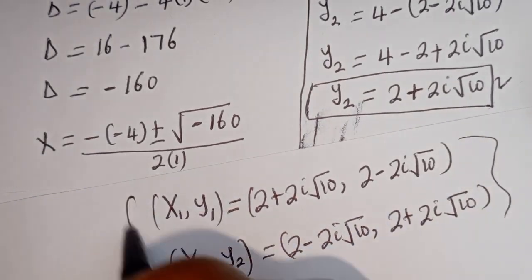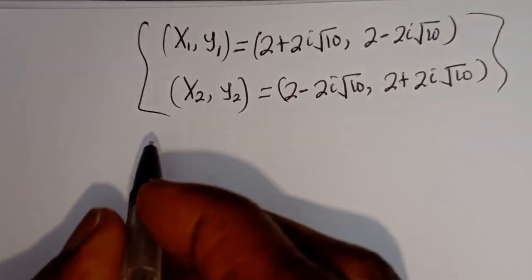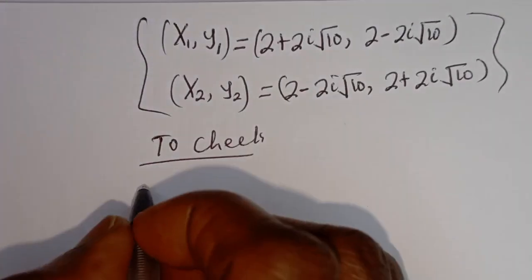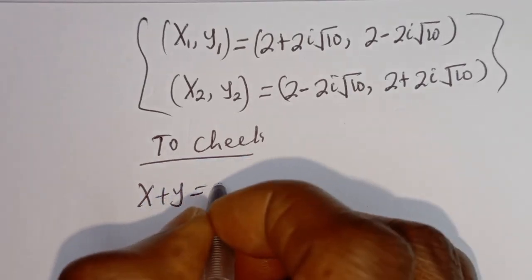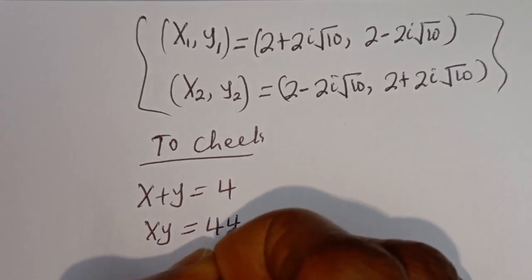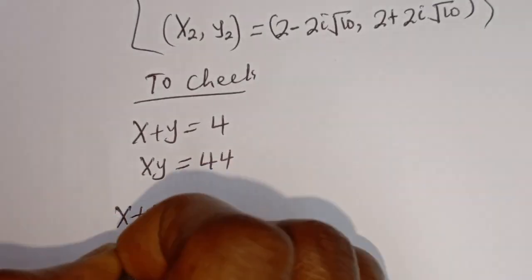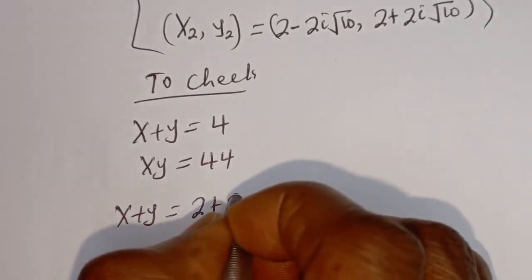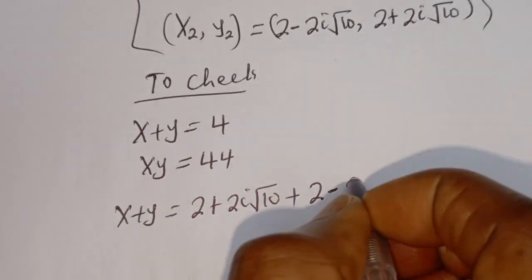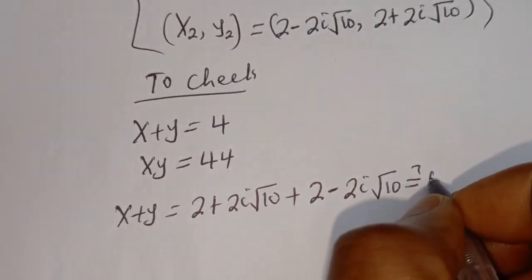These are the final answers. Let's check to confirm if these answers are right. We have the given equations x plus y is equal to 4 and xy is equal to 44. Let's check: x plus y is equal to (2 plus 2i root 10) plus (2 minus 2i root 10), which must be equal to 4.